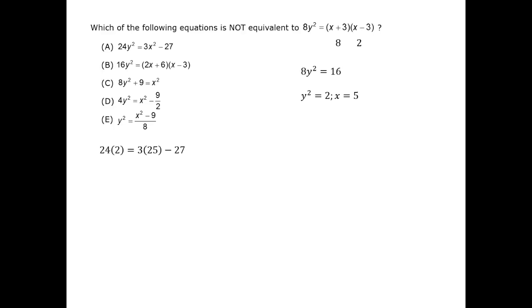Putting the values into a, we can see that we get 48 equals 75 minus 27, which is true. Therefore, a is equivalent and is probably not the correct answer.